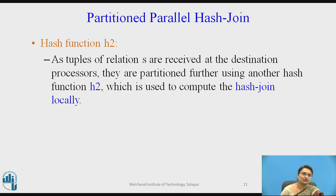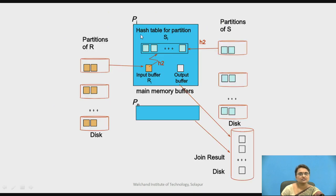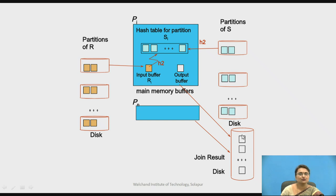Hash function h2 receives the already partitioned data from h1 and further applies another function to compute the hash join locally. Once the second hash function is applied, the local hash join operation takes place. Relation r is partitioned, relation s is partitioned, and then repartitioned with h2. The processors apply h2 locally and store the join results in an output buffer, which is then written to the output disk. In this way, two-level partitioning and repartitioning is done in the parallel hash join technique.